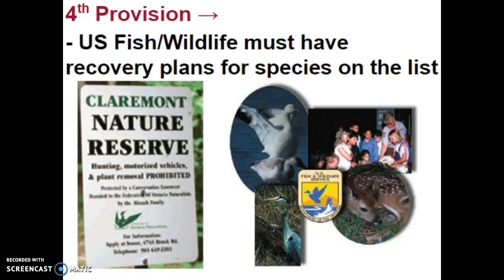The last provision is that the U.S. Fish and Wildlife Service must figure out how to get those animals or plants off the list. There has to be a recovery plan — an action taken in order to increase those numbers.